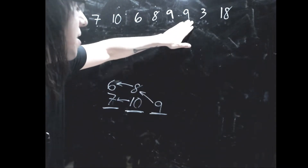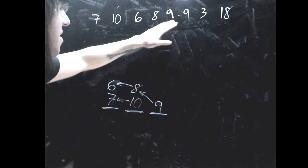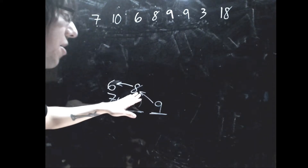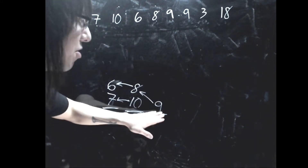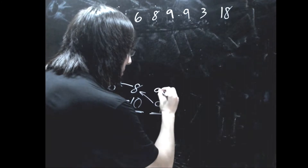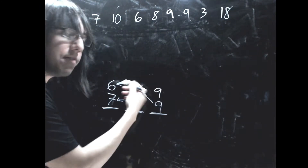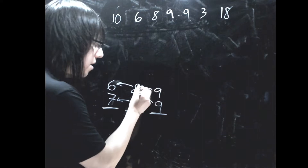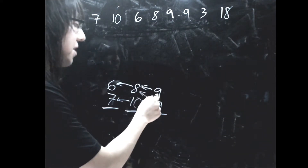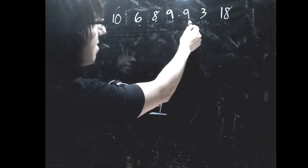Now I'm at the other 9. I look at the top elements: is 9 less than or equal to 6? No. Is 9 less than or equal to 8? No. Is 9 less than or equal to 9? Yes. So this 9 goes at the top of this pile, and I draw an edge to the top of the previous pile. This gives us another longest increasing subsequence: 6, 8, then this 9.